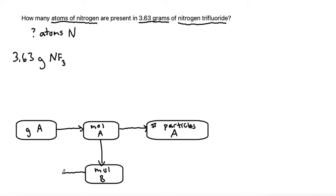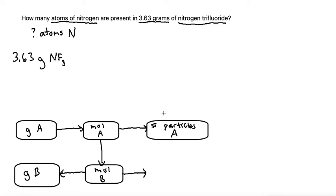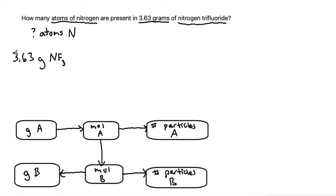Once we get to moles of B, we can go to grams in one direction and number of particles in the other direction. So I'm starting with 3.63 grams of NF3 — that's grams of A — and trying to get to atoms of nitrogen, which is number of particles of B, since it's a different compound. Atoms are a type of particle, so I'll circle number of particles of B.